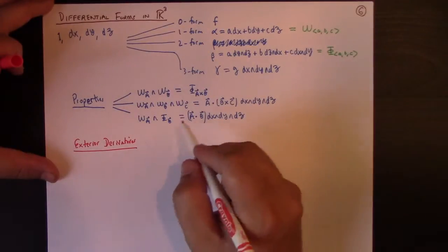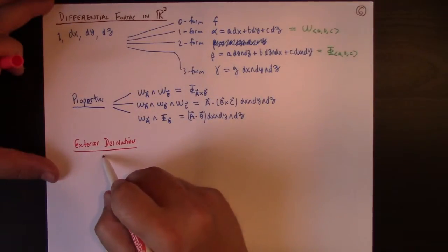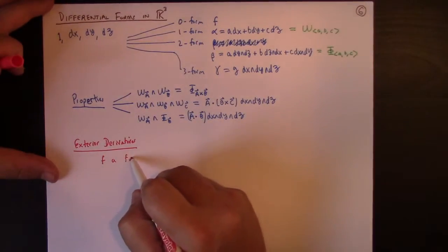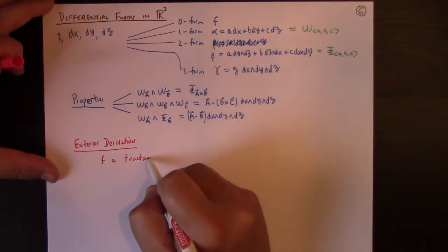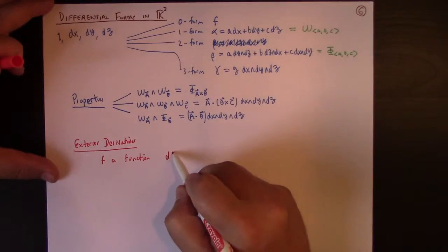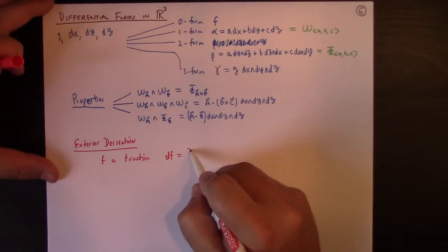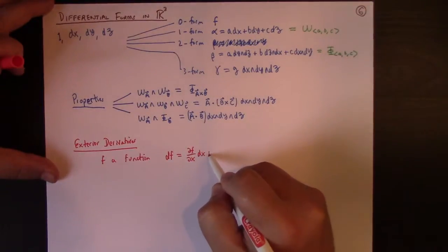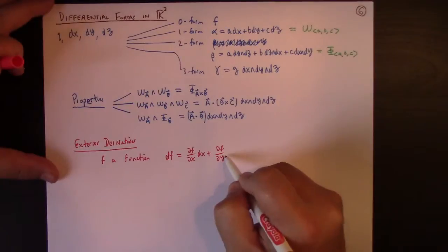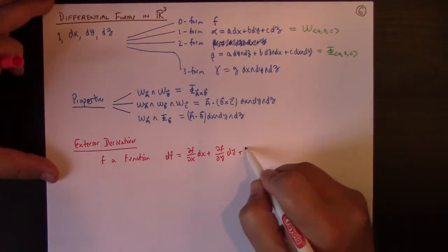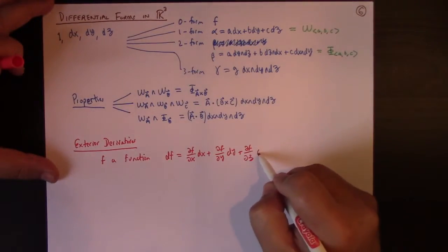Of course, we talked about for a function f, df is what? It's partial f partial x dx plus partial f partial y dy plus partial f partial z dz.